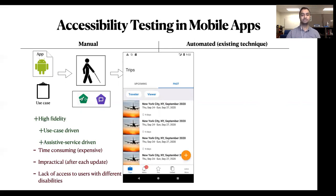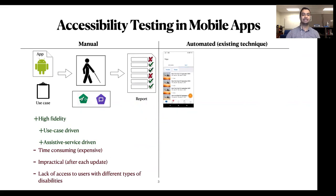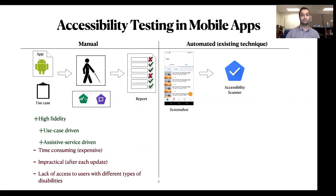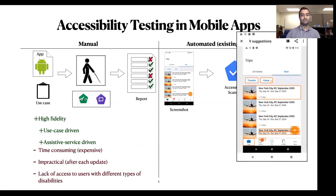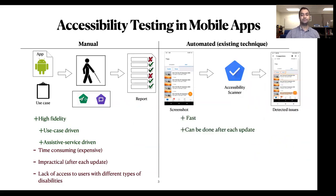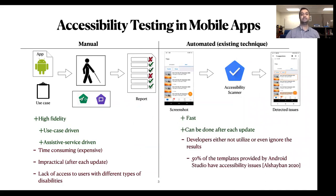The other way of testing is through automated tools. Existing automated testing techniques such as Accessibility Scanner scan a screenshot and perform some checks on individual GUI elements according to accessibility guidelines. Automated techniques are fast and can be performed after each update of the app. However, developers either do not utilize or even ignore the results. One study showed that half of the GUI templates in the official Android IDE have accessibility issues.